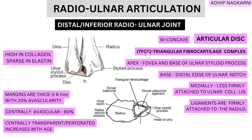Looking at the composition of the TFCC, it is high in collagen and sparse in elastin — elastin is evenly distributed but minimal throughout the disc. The disc is thicker on the margins and thin or perforated centrally, and this perforation increases with age. At the margins it is 3–6 mm thick with only about 20% avascularity, meaning 80% of the margin has good blood supply. Centrally, the opposite is true — about 80% avascularity, with only 20% receiving good blood supply.